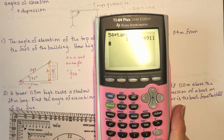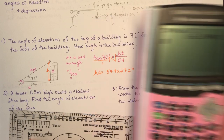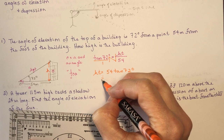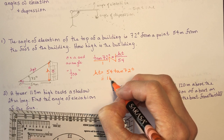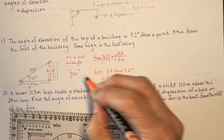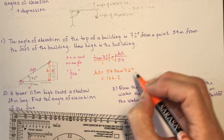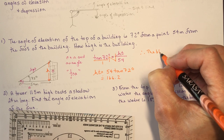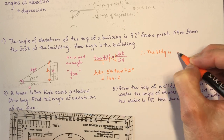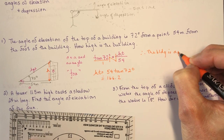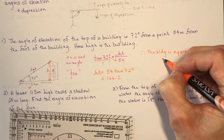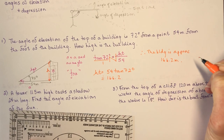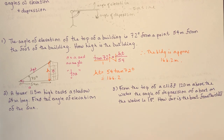54 × tan(72°) ≈ 166.2. Therefore the building is approximately 166.2 meters tall. And there's your first question.